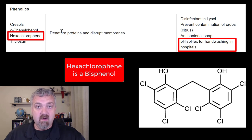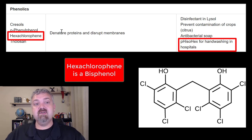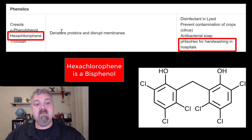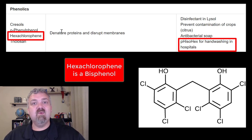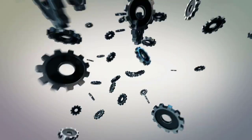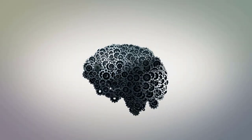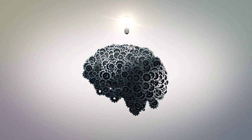So that is your phenol — the original phenol that Joseph Lister was using — the phenolics, and then the bisphenol hexachlorophene. I'll do a separate video on triclosan, so I hope this helps. Have a wonderful day. Be blessed.